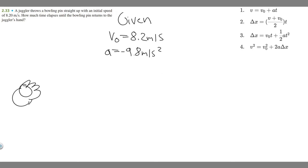And then we also know delta y, which is the change in y, is going to be zero. And I'm going to try and explain to you why that is. So it's going to be zero meters. Keep in mind what they're asking. They're asking how much time elapses until it returns to the juggler's hand. So it's going to start in the hand. So imagine our y is zero right now.